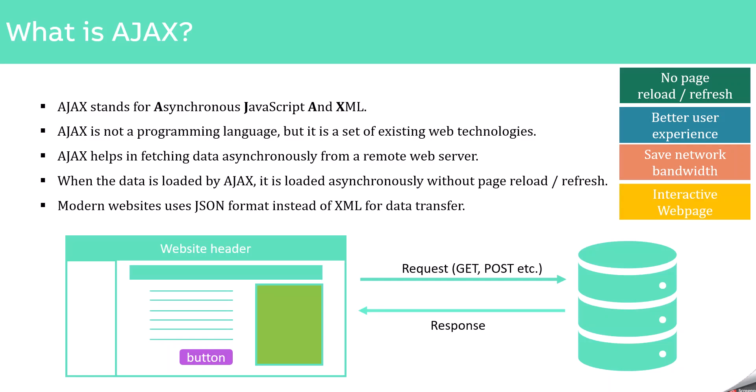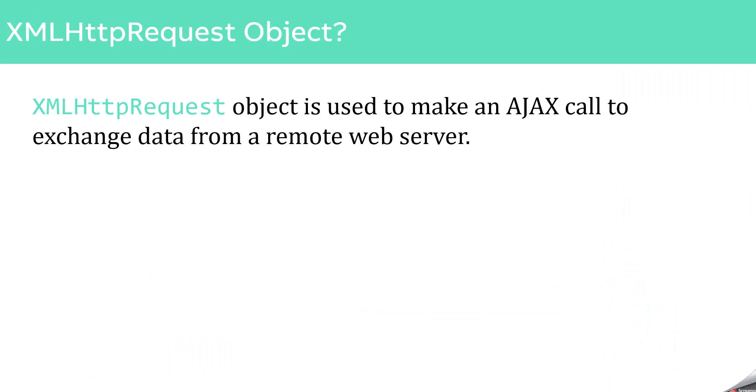Now let's see how to make AJAX calls from our JavaScript code. To do that, we use the XMLHttpRequest object. With the help of this object, we send a request to the server asynchronously, and then the server sends us the data we requested.